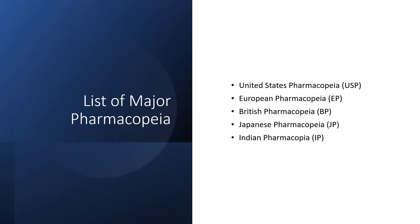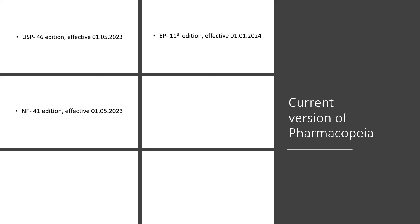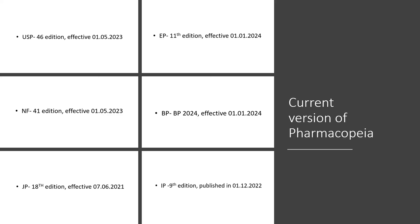The current version of the USP is the 46th edition, effective 1st January 2024. The National Formulary current version is NF 41, effective 1st May 2023. The British Pharmacopoeia 2024 is effective 1st January 2024. The Japanese Pharmacopoeia is the 18th edition, effective 7th June 2021. The Indian Pharmacopoeia is the 9th edition, published 1st December 2022.